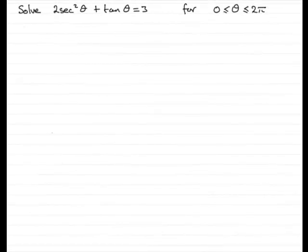Hi, welcome to this example on solving trig equations. Now in this example, we've got to solve 2 sec squared theta plus tan theta equals 3 for theta between 0 and 2 pi radians inclusive.